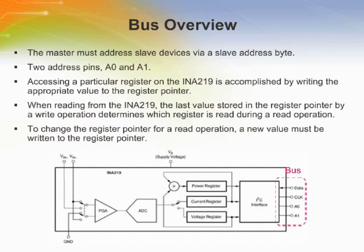The INA219 offers compatibility with both I2C and SMBus interfaces. The device that initiates the transfer is called the master, and the devices controlled by the master are called slaves. The bus must be controlled by a master device that generates the serial clock, controls bus access, and generates start and stop conditions. The master initiates a start condition by pulling the data signal from high to low logic level while SCL is high. All slaves on the bus shift in the slave address byte on the rising edge of SCL, with the last bit indicating whether a read or write operation is intended. During data transfer, SDA must remain stable while SCL is high. Any change in SDA while SCL is high is interpreted as a start or stop condition.